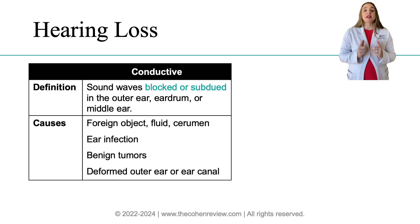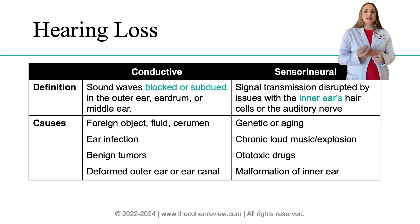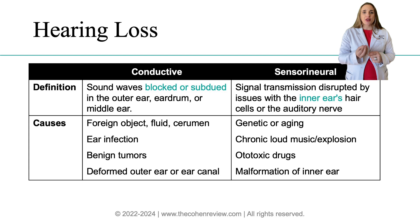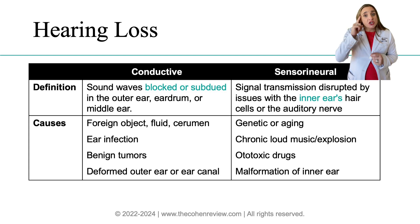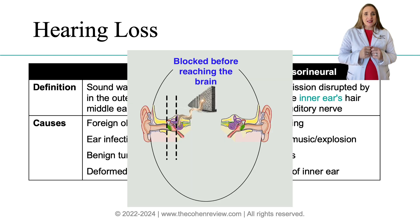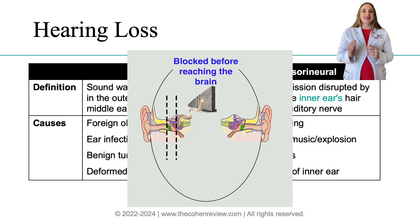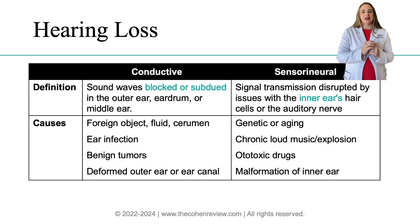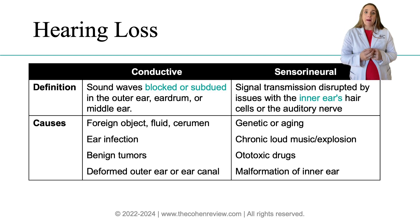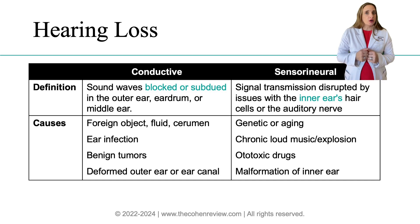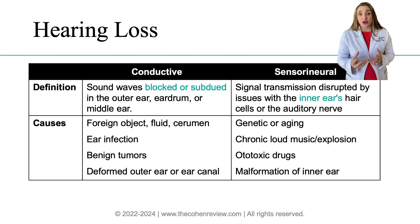Sensorineural hearing loss occurs when damage or dysfunction affects the inner ear, the hair cells, or the auditory nerve, disrupting the sound signal transmission to the brain. Causes? Think of nerve disruption or the disruption in the conduction of sound, kind of like an electrical malfunction. For example, Meniere's disease or ototoxic drugs damaging the cochlea or the auditory nerve.